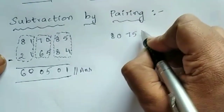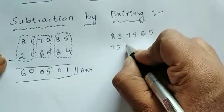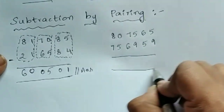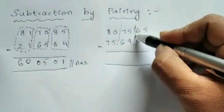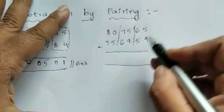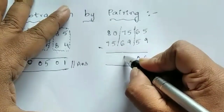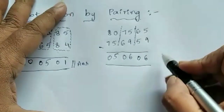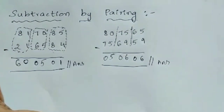One more pairing example: the number is 80807565 65 minus 59 is 6 — write 06. 75 minus 69 is 6 — write 06. 80 minus 75 is 5 — write 05. So the answer is 50606. These tricks are very useful in competitive exams where they give big numbers and ask you to solve within seconds. You have to observe the numbers carefully.